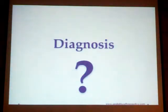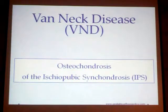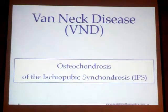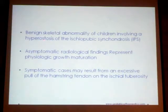So what is the diagnosis? It is Van Neck disease. What is Van Neck disease? It is osteochondrosis of the ischiopubic synchondrosis. It is a benign skeletal abnormality in children involving hyperostosis of the osteochondrosis, first described in 1923 and 1924 under many names. It is not osteochondritis — it is not inflammatory — it is osteochondrosis.